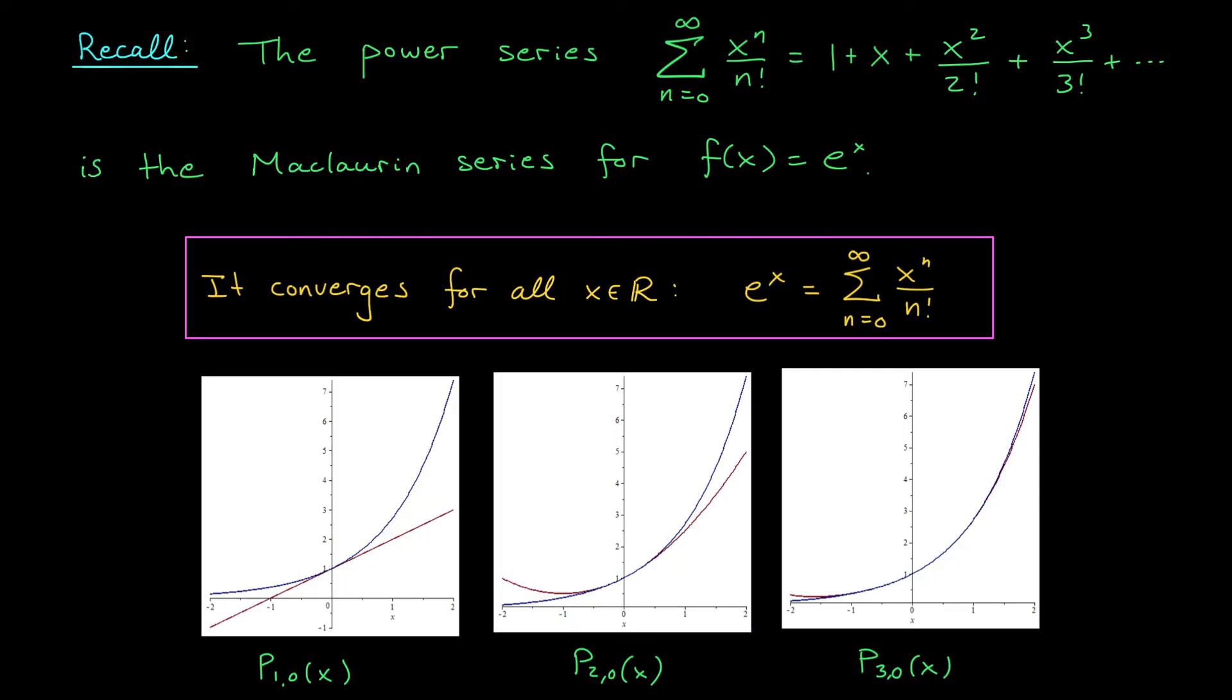The following pictures at least back up our intuition. You can see e to the x is plotted in blue, and its first, second, and third degree Maclaurin polynomials in red. As the degree of the polynomial increases, the approximation is getting closer and closer to e to the x, not just near x equals zero, but at points that are farther away as well. So maybe it seems believable that the Maclaurin series for this function really is converging to e to the x.